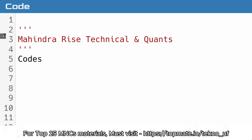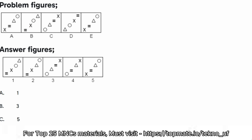Let me share the first question, which is from spatial reasoning. There will be some figures given to you and you have to figure out what will be the next figure. You have to observe what pattern it's following and then find which figure will suit. Please pause and try it. In this figure, X is equal to triangle and a circle is present in a certain format.